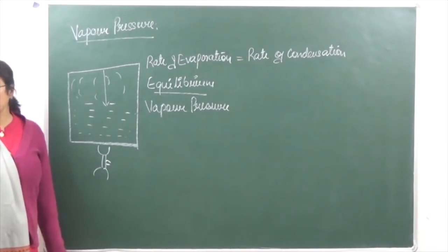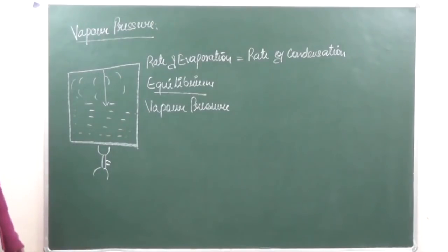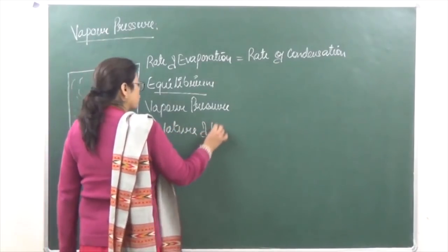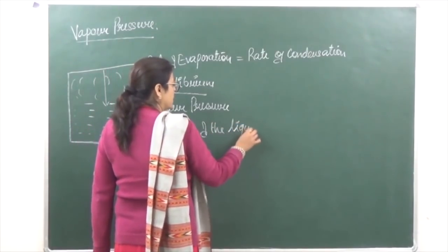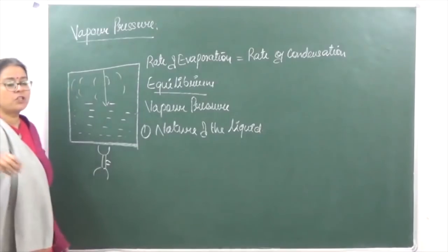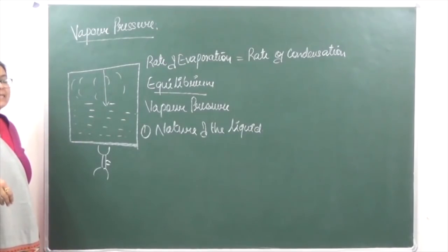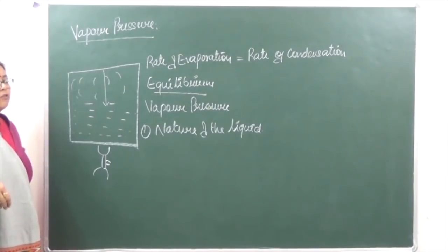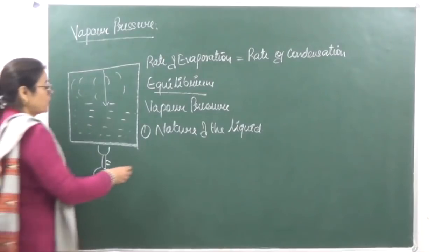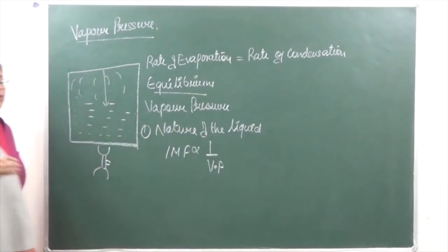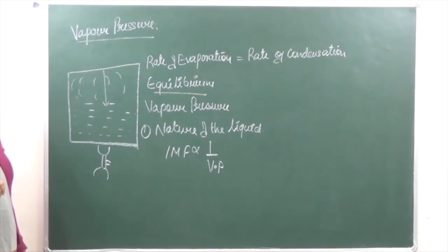Vapor pressure depends upon the following factors. Number one, the nature of the liquid. If the forces of attraction between the molecules are more, less vapor is going to be formed, and hence the vapor pressure is also going to be less. So, more intermolecular forces of attraction means less vapor — intermolecular forces of attraction are inversely proportional to vapor pressure.